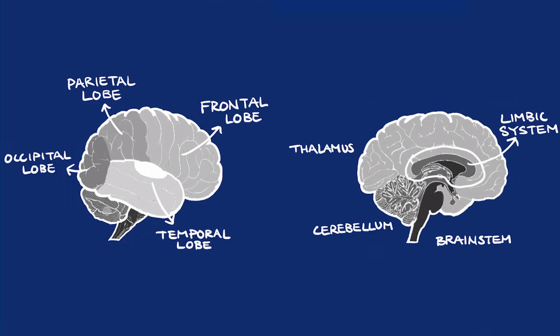Emotion is processed in the center of the brain in a region collectively known as the limbic system. Also in the brain are some important structures, including the thalamus, which relays sensory information throughout the brain; the basal ganglia, which is involved in reward processing and movement; the brainstem, which carries signals to and from the brain; and the cerebellum, which is involved in coordinated movement.